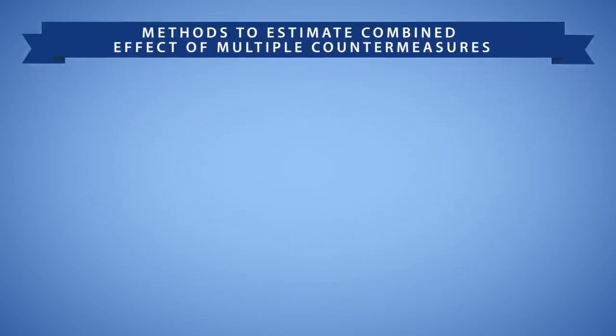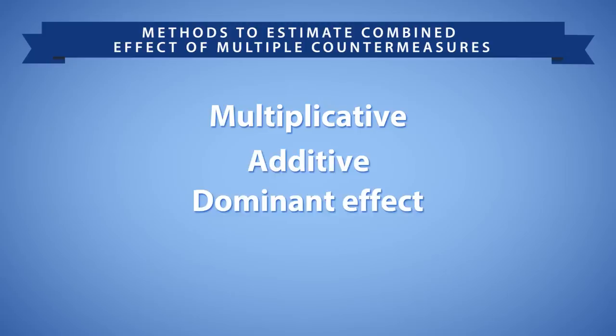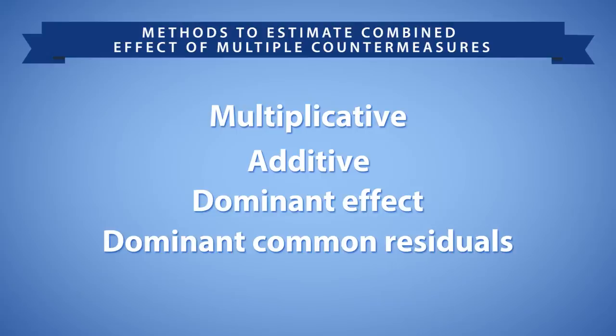The first edition of the Highway Safety Manual, or HSM, suggests the multiplicative method for estimating the combined effect of multiple countermeasures. While this method is relatively straightforward — you simply multiply two CMFs to obtain the combined effect — it may not be the most reliable method. Other methods, such as additive, dominant effect, and dominant common residuals methods, may provide a more reliable estimate depending on the scenario.